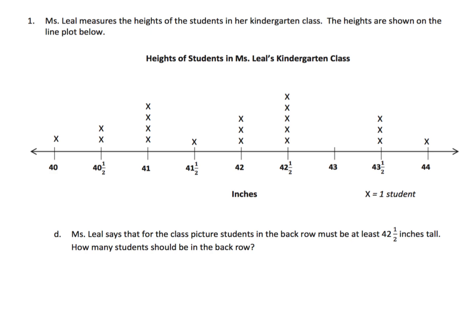And then lastly, Miss Leal says that for the class picture, students in the back row must be at least 42 and a half inches tall. So how many students are that? At least. Now parents and teachers, some serious vocabulary - at least, at most, exactly - these are all words that you might want to put on a word wall, especially for your English language learners. At least means 42 and a half inches is good and higher. So we know that we're going to count these five, plus these three is eight, plus one more is nine. So this answer would be nine because at least 42 and a half inches is an important little piece of terminology.